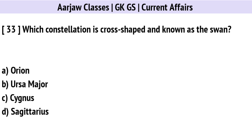Which constellation is cross-shaped and known as the swan? Correct option is C: Cygnus.